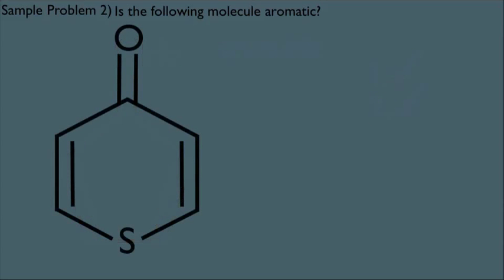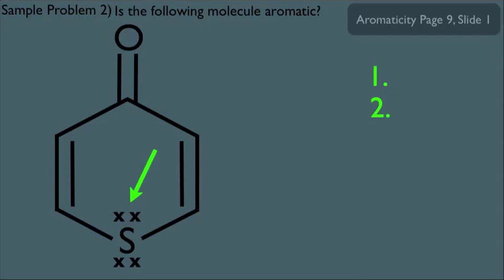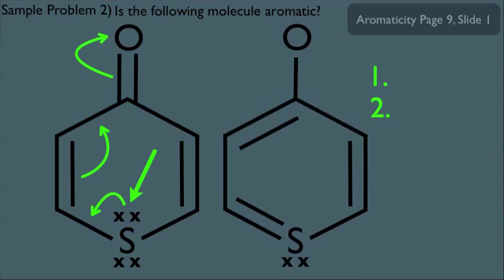Let's look at another example. Let's see if this molecule is aromatic. First, let's put the lone pair electrons on this sulfur. This molecule does have resonance in the sense that these electrons can fall down this way, pushing these pi electrons this way, and the pi electrons in the carbonyl bond would move up on top of the oxygen. The result of that resonance move gives us a structure where our sulfur now has a double bond, making it sp2 hybridized, which means it could have an unhybridized p orbital.